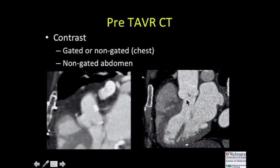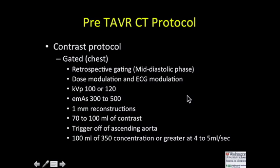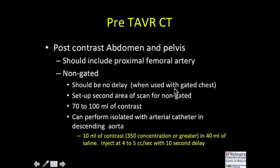We can very easily see the attachment of the valvular leaflets and evaluation of the outflow tract on gated studies compared to non-gated. Our gated TAVR protocol covers the chest; we also do an abdominal phase that's non-gated. We are conscious of radiation exposure, so we do dose modulation and ECG modulation, lowering our KV and MAs relative to a coronary CTA, using about 100 cc's of contrast injected at 45 cc's per second. The abdominal component is set up as a separate range without delay, without overlap, and non-gated.